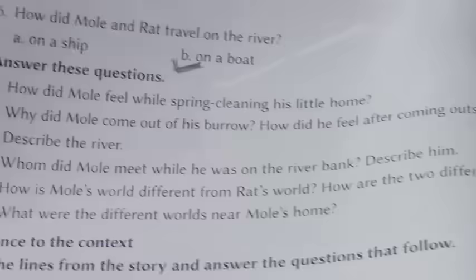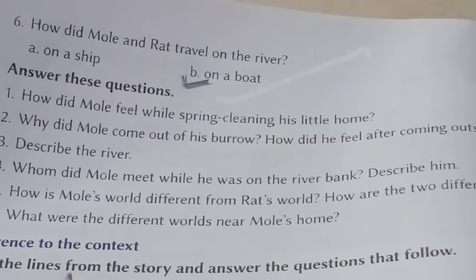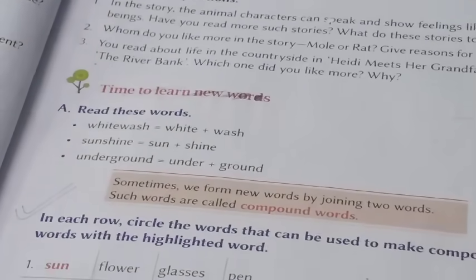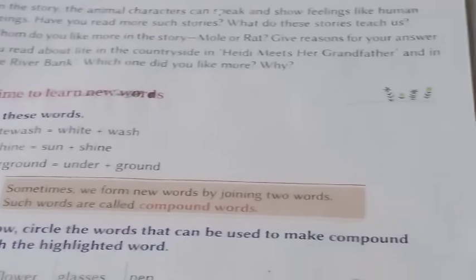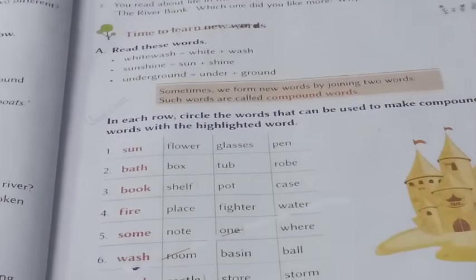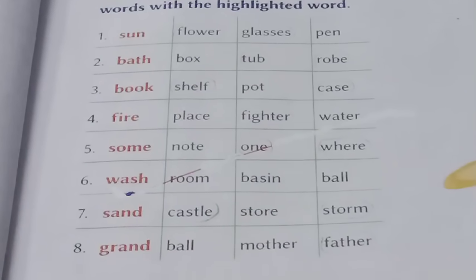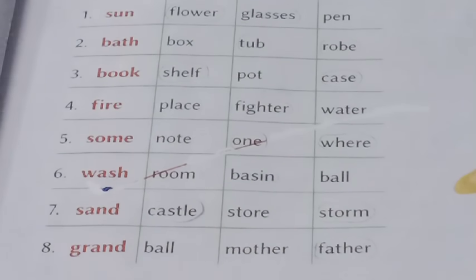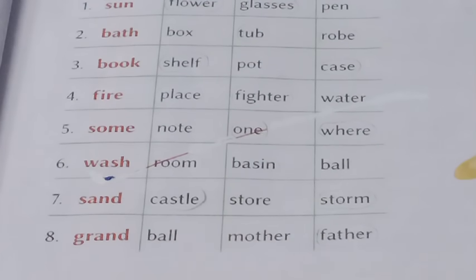Next is: answer these questions — you will get those on the website — reference to context, and the other questions. Now come to page number 27. We will do this in the book. There are certain words we make by combining two words.